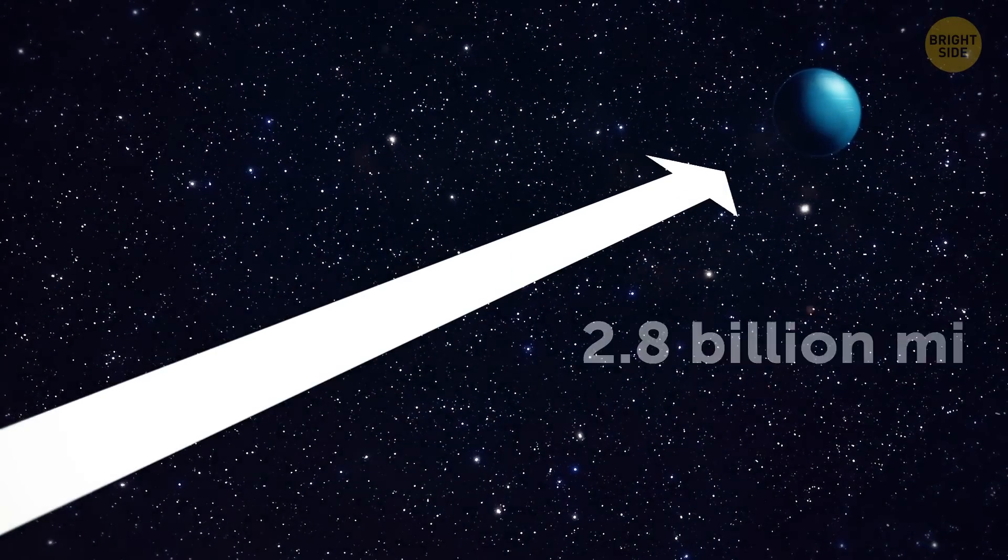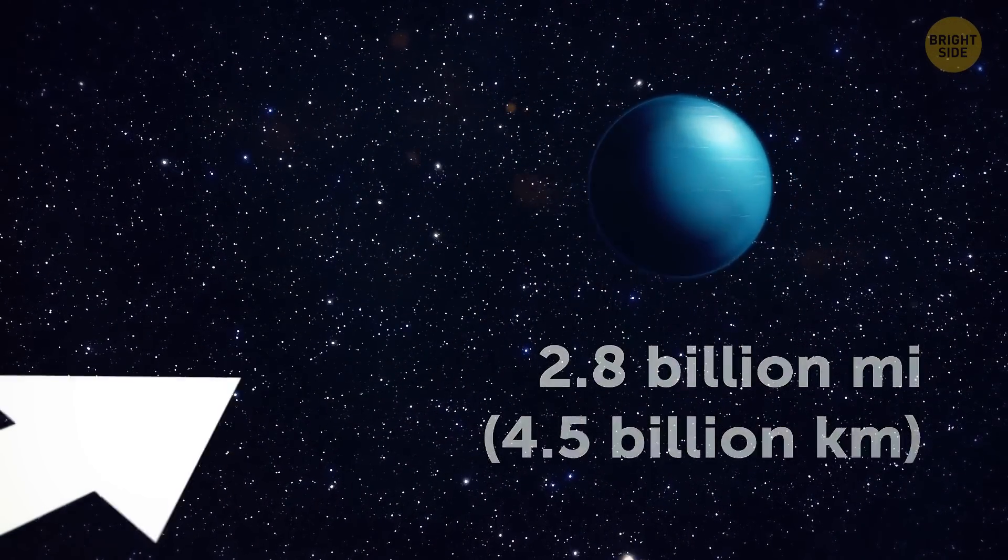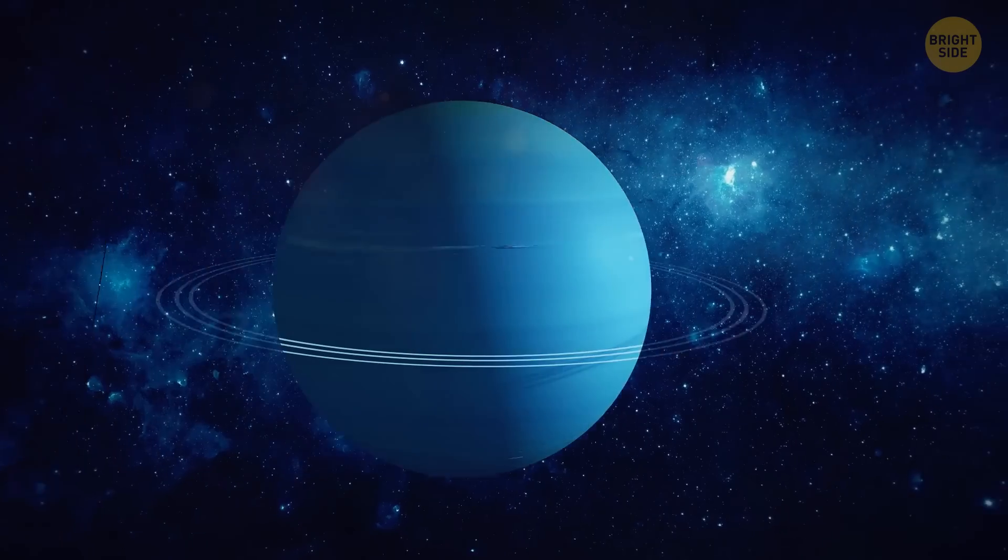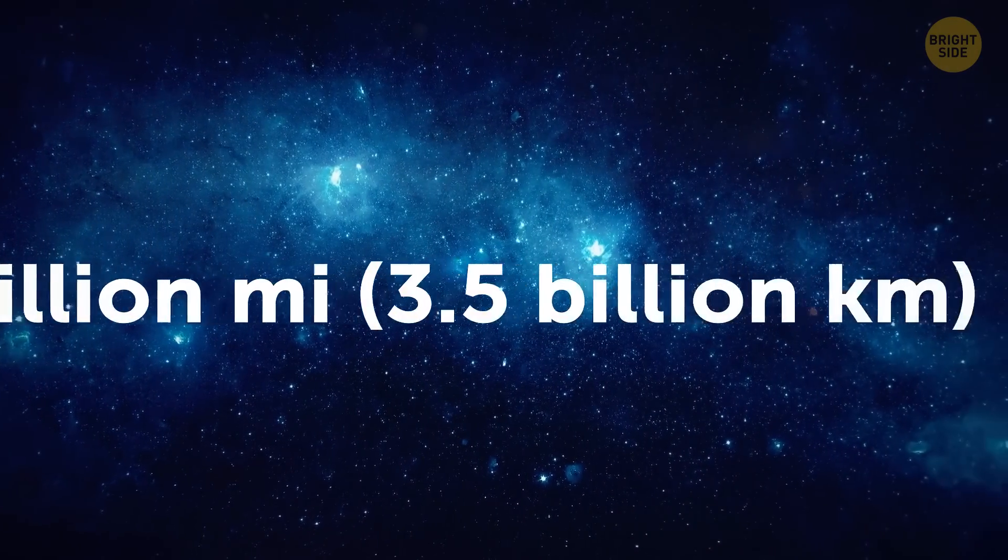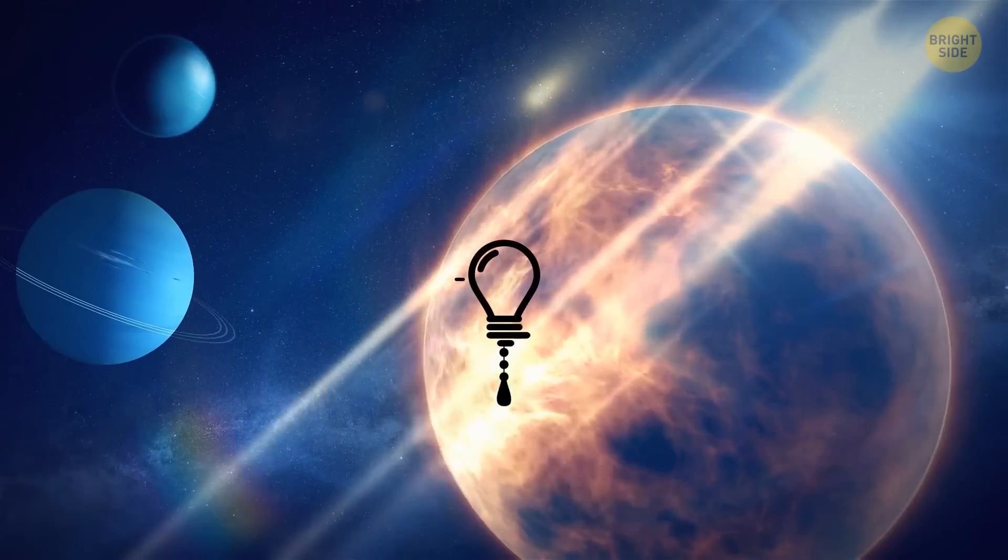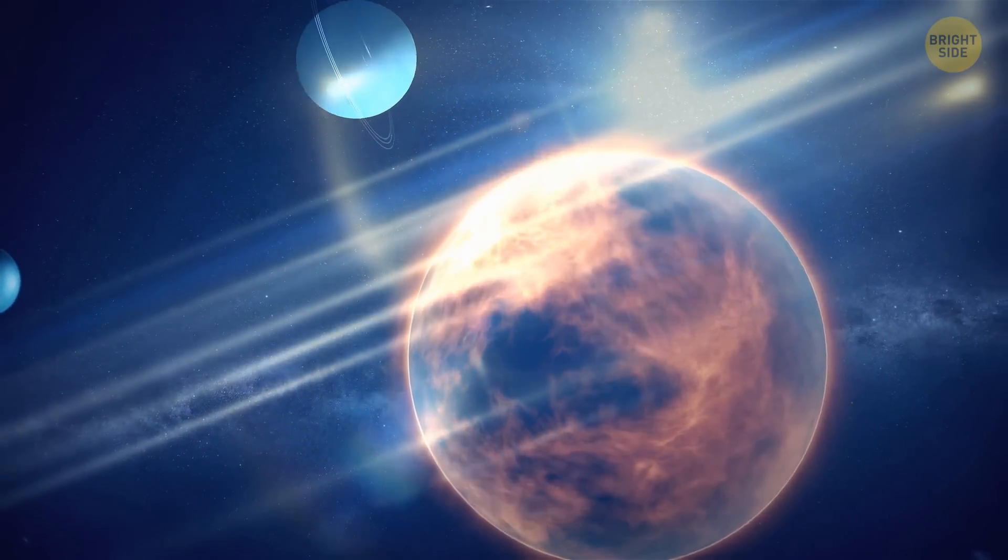Neptune is about 2.8 billion miles away, the farthest any planet can be in our solar system. Uranus is a bit closer, located at 1.9 billion miles. This new idea suggests that after they formed way closer to the sun than they are today, their positions were altered.